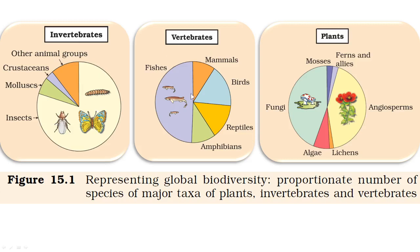In the vertebrates section, fishes contribute the maximum number of species, followed by birds and reptiles which are roughly similar, and then mammals and amphibians. In plants, fungi and angiosperms are almost equal in terms of species numbers and both are significantly larger than algae, lichens, ferns, and mosses.